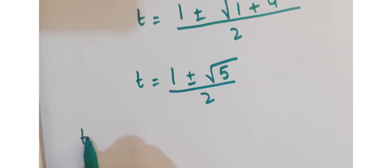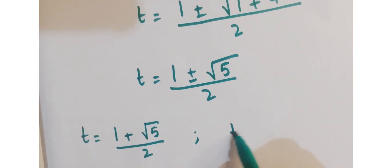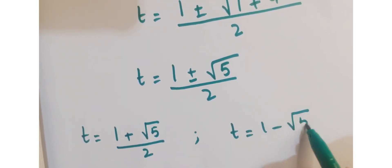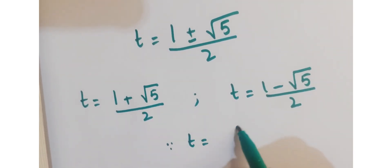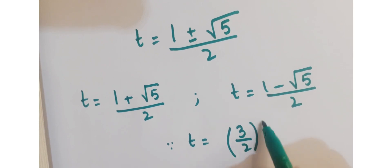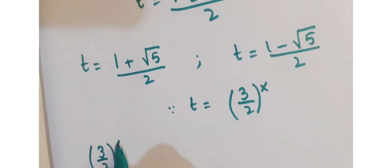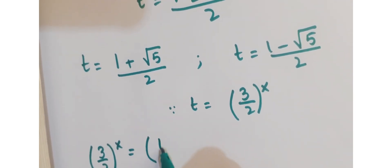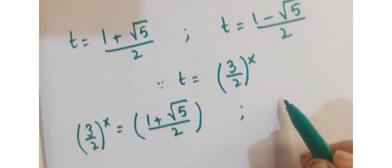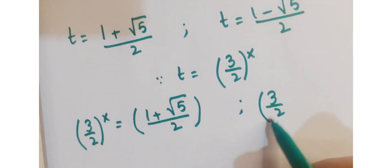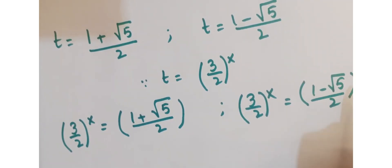So we have two possibilities. First, t equals 1 plus under root 5 upon 2, and the second is t equals 1 minus under root 5 upon 2. Now according to our assumption, t equals 3 upon 2 whole to the power x. Replacing this in our results, we get 3 upon 2 whole to the power x equals 1 plus under root 5 upon 2, and 3 upon 2 whole to the power x equals 1 minus under root 5 upon 2.